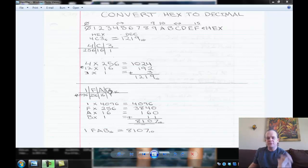B. What is B? B is going to be 11. So B, 11 times 1 is 11. Then we go to A. A is 10. 10 times 16 is 160. Go to F. F is 15. 15 times 256 is 3840. 4096. So 1 times 4096 equals 4096. 4096 plus 3840 plus 160 plus 11 equals 8107 in decimal.